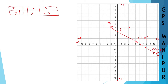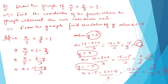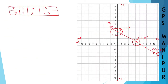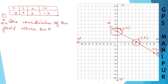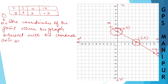The graph intersects the y-axis here and the x-axis here. Therefore, the coordinates of the points where the graph intersects the coordinate axes are (0, 3) and (5, 0). These are the two intersection points with the coordinate axes.